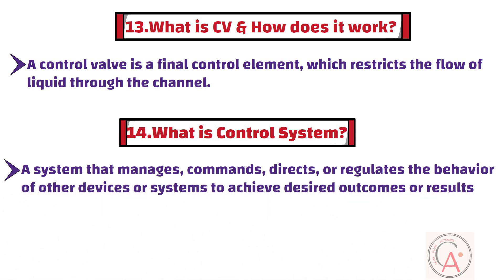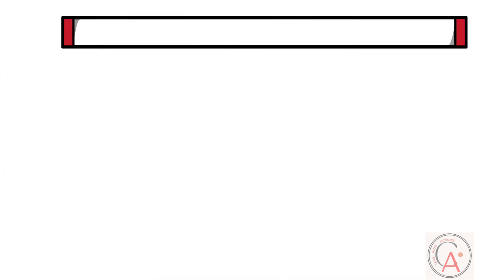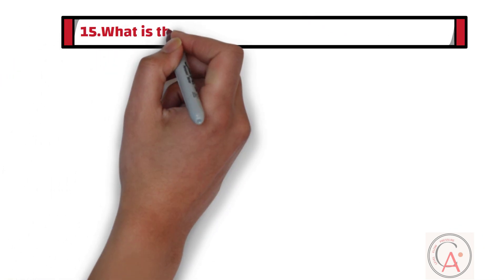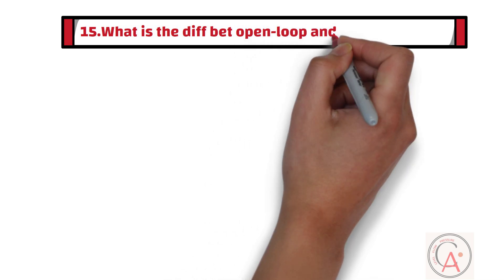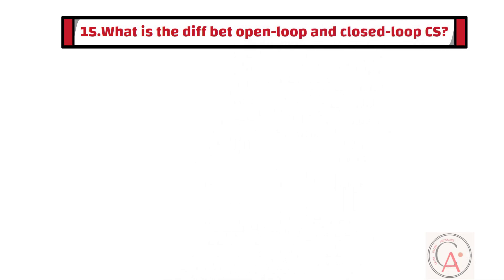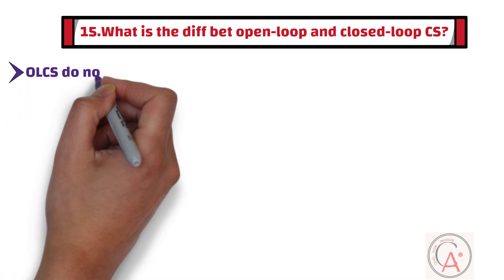The fifteenth number question is, what is the difference between open-loop and closed-loop control systems? The main difference between open-loop and closed-loop control systems is that open-loop control systems do not have feedback. All closed-loop control systems use feedback to adjust the control action.